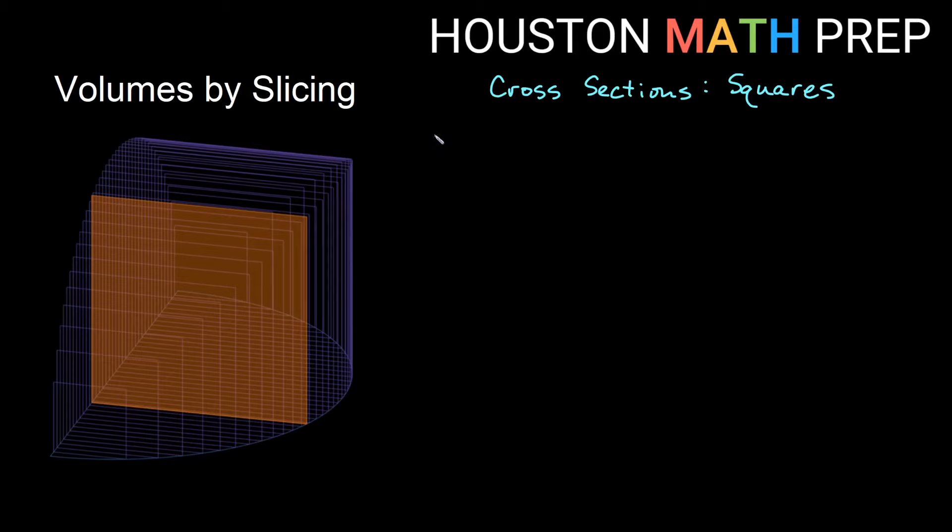So if we have square slices, our volume again is going to equal the integral from a to b formula for the area of each slice, integral dx. So what is the area for this? This one's not so bad. I need the area of a square. Well, square is simply going to equal whatever the side length is squared, side times side.